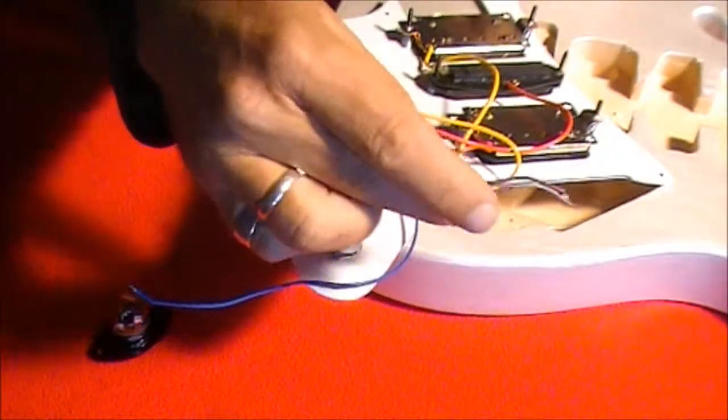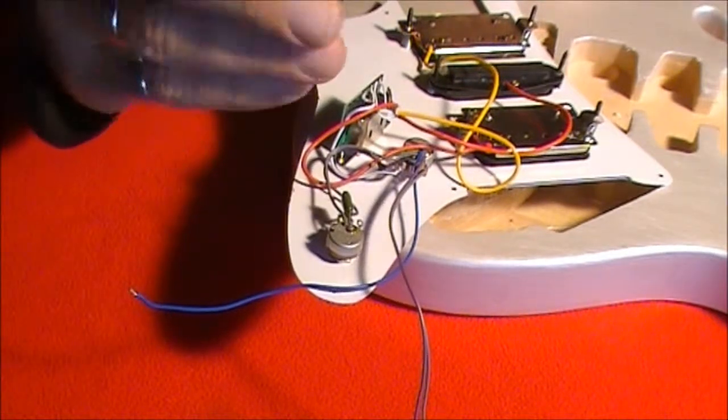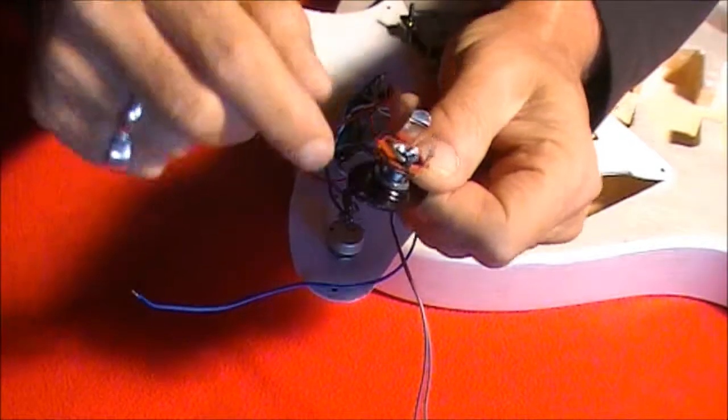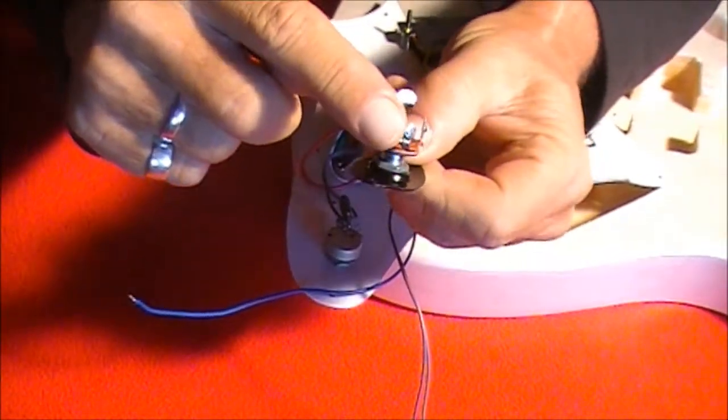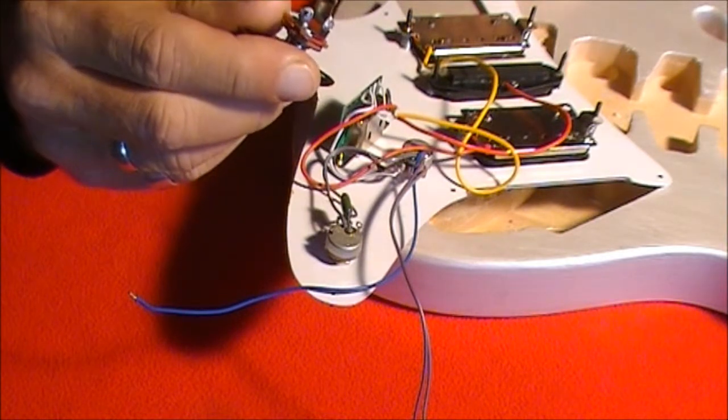Now this other wire, the grey wire, is a hot wire and that needs to be soldered to our output on the outer hot or tip point of the output jack. So step one, we'll solder the hot wire to the output jack.